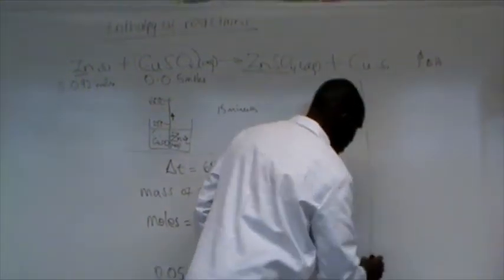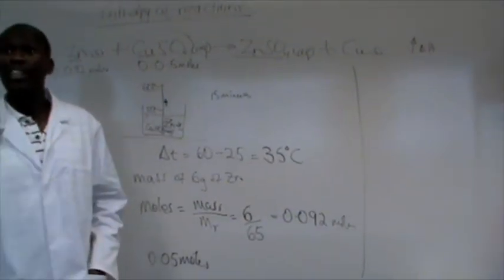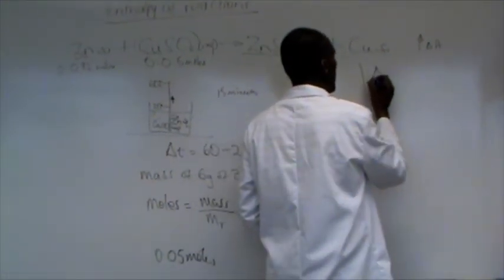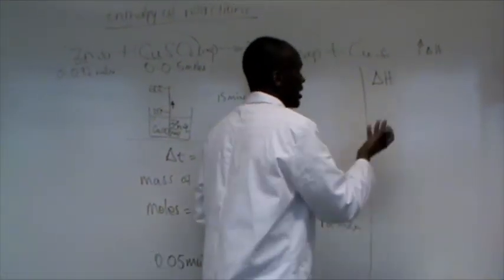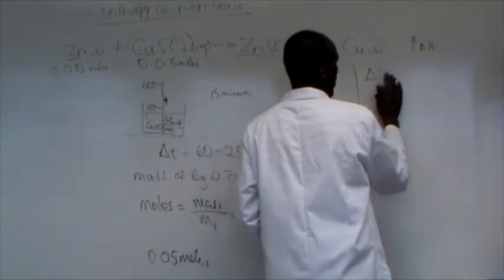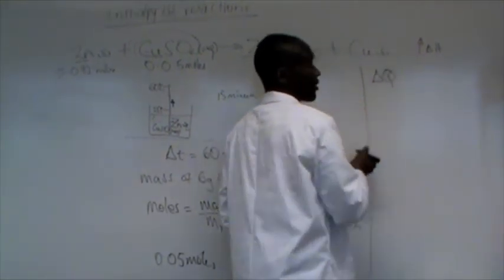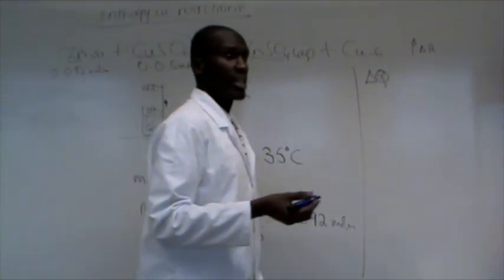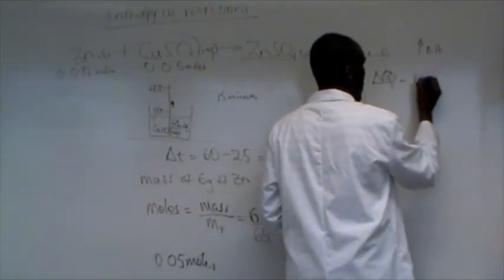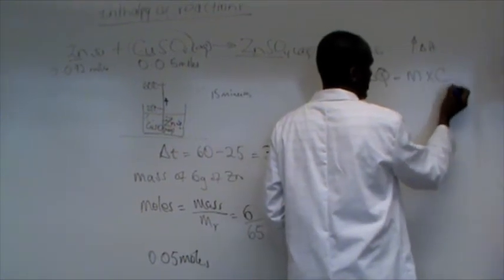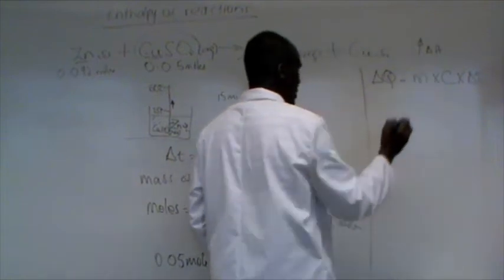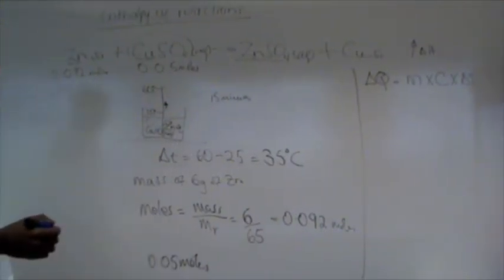Now, down to calculation of the standard enthalpy of the reaction. Number one, I want to work out the amount of heat. How do I get the amount of heat? Some use delta H or delta Q. How do I get the value of Q? M C delta T. It's going to be mass times specific heat capacity times the changing temperature.